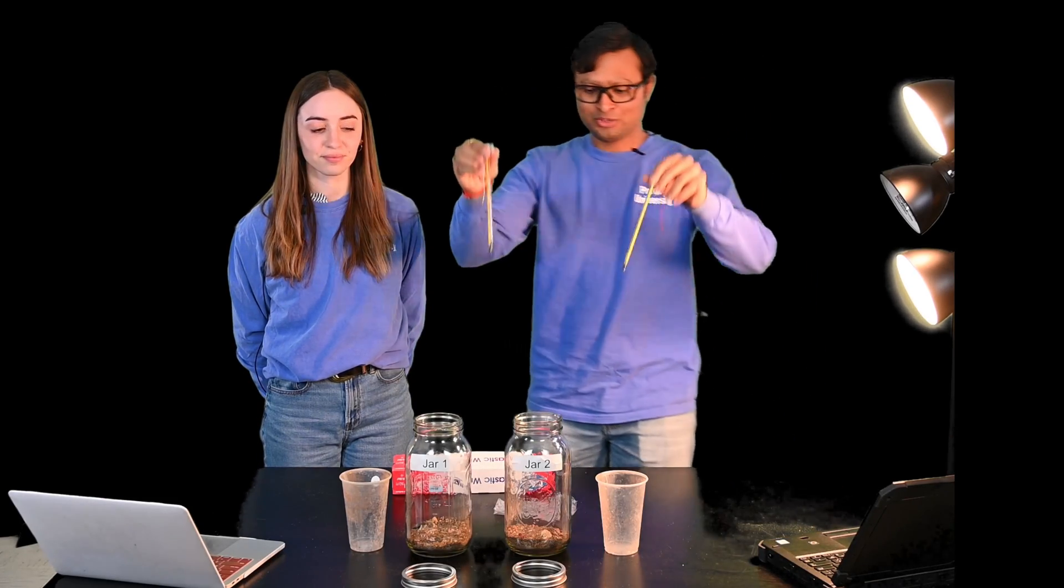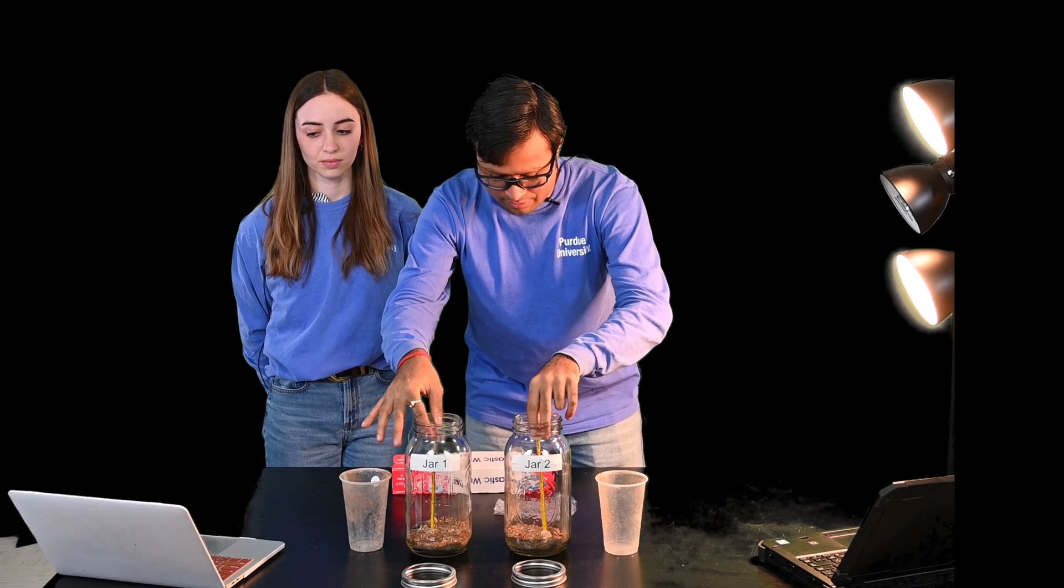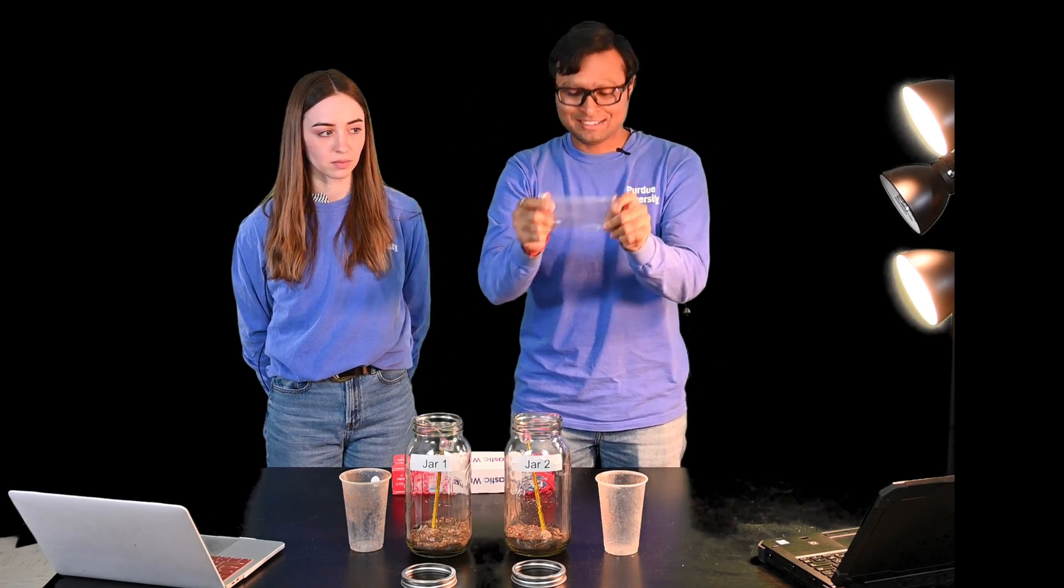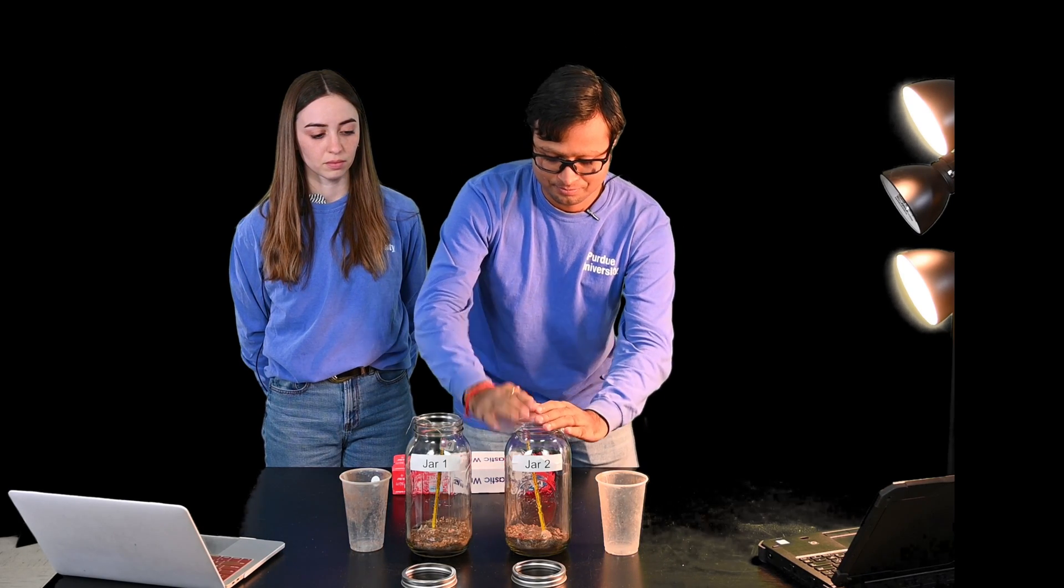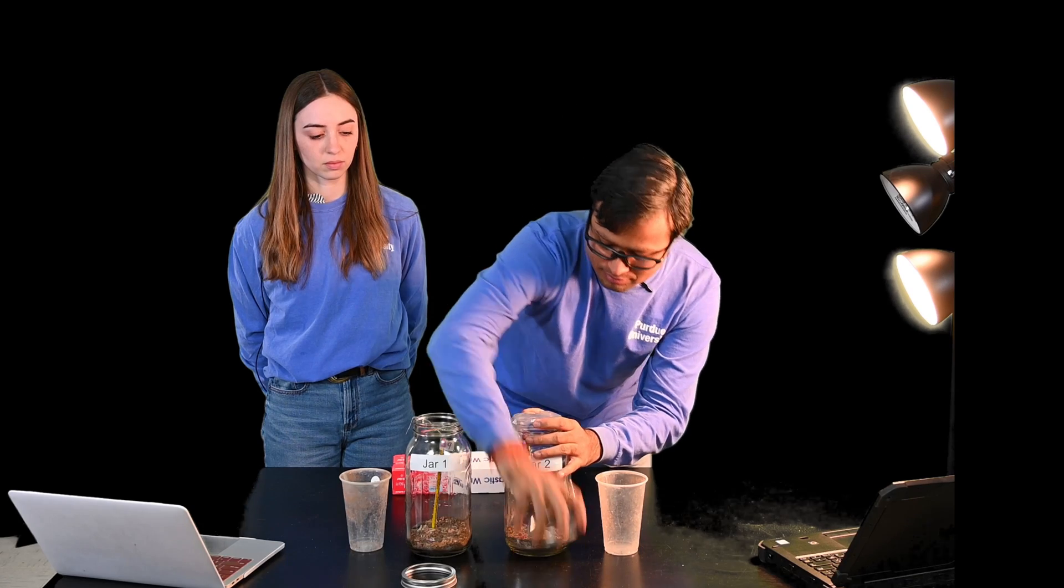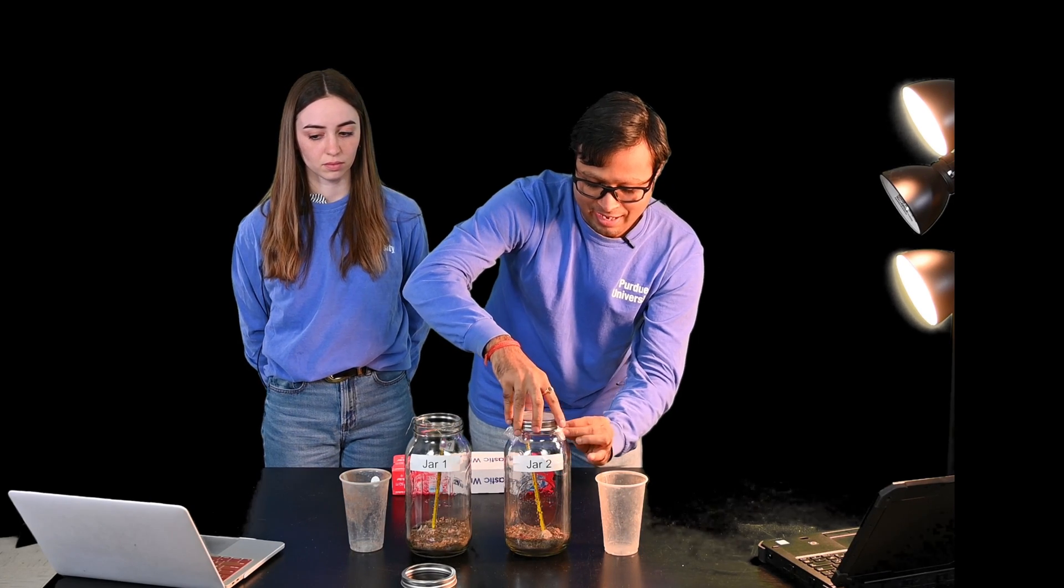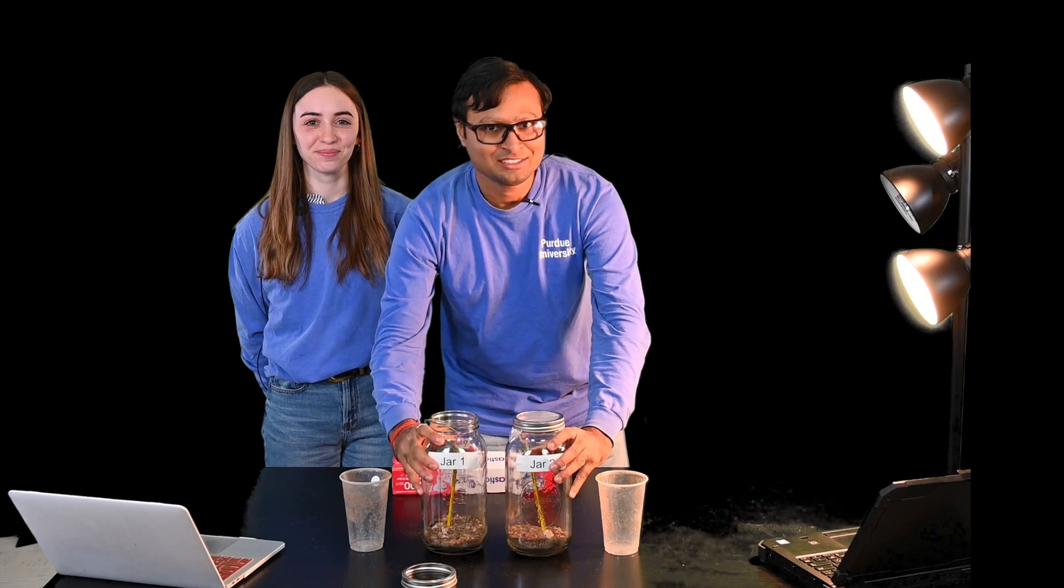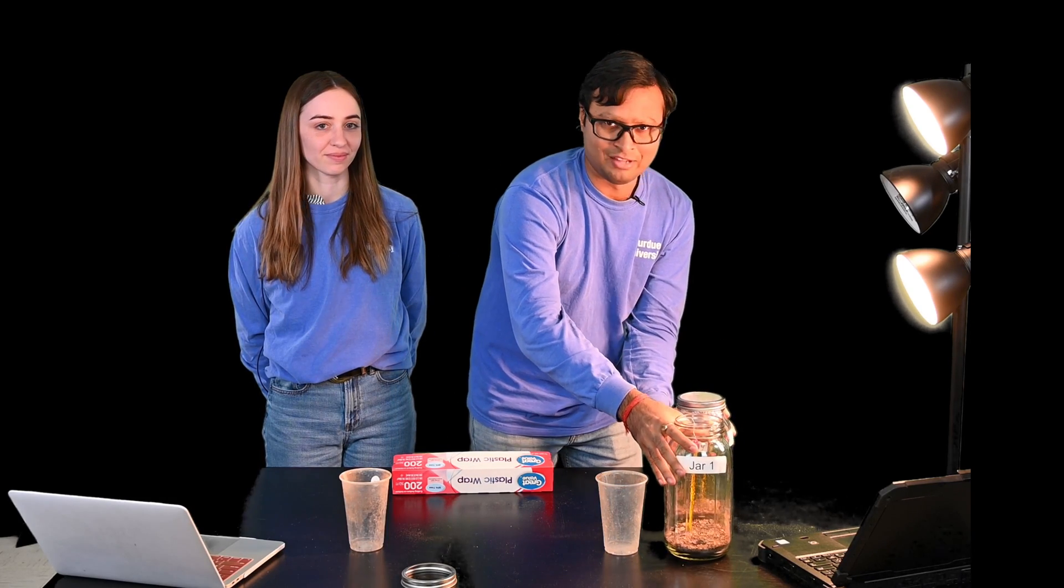Now we take these two thermometers and put them in the two jars. We use thin plastic sheet which acts like a greenhouse and place it over jar two. The plastic sheet will act like the greenhouse and trap the heat that's entering it. We take the two jars and place them at equal distance from the source of light.